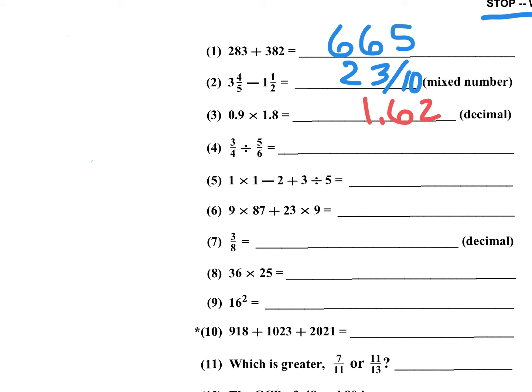Number 4, 3 fourths divided by 5 over 6. When you divide, you multiply by the reciprocal. So you're multiplying 3 fourths times 6 over 5. So that would be 18 over 20, and if you reduce that, that's 9 over 10 or 0.9. It doesn't specify, so you could write 9 over 10 or 0.9.